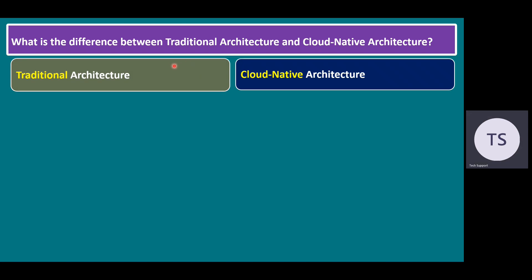If we plan to compare between the traditional architecture and cloud-native architecture — as we are aware, traditional architecture has servers, and on top of the servers we are running virtual machines, and every virtual machine or physical server runs with an operating system and applications. When it comes to cloud-native, cloud-native means either cloud-based, or we call it cloud as the essential architecture — meaning it is a specific cloud-home architecture.